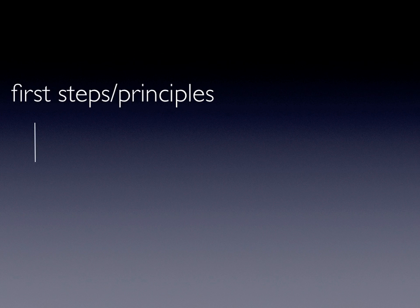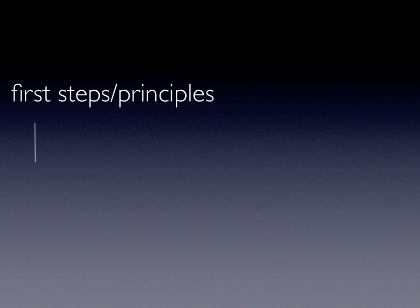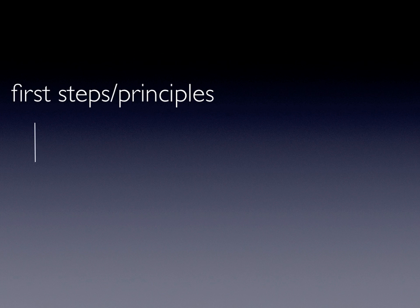Three: as your institution digs deeper into learning analytics, you'll invariably find yourselves debating what it is that the student should actually be learning — this is an excellent byproduct of developing better measurement of learning. Four: make a commitment to actually use the information. It's not difficult to generate more information, but putting it to use is more difficult, and it's ultimately where the rubber hits the road. Five: if your institution draws resources from external providers such as textbook companies, be prepared to ask them tough questions about how their materials and services support your institution's need to better measure learning.